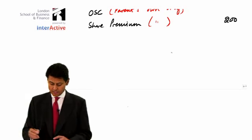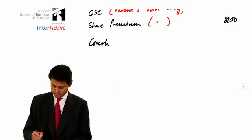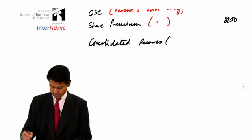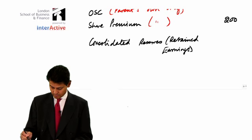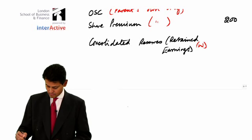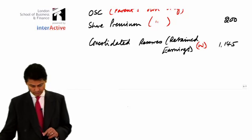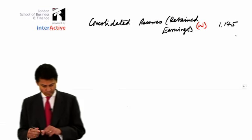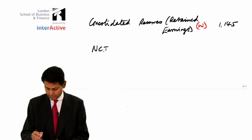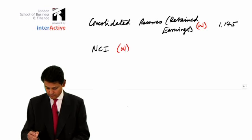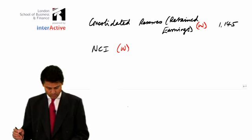And indeed, you have near that the consolidated reserves, which is the retained earnings workings. And that figure, of course, is 1145. Then you have your NCI, which is obviously 195.